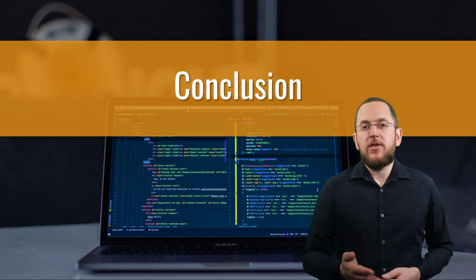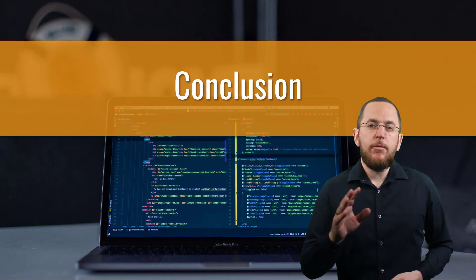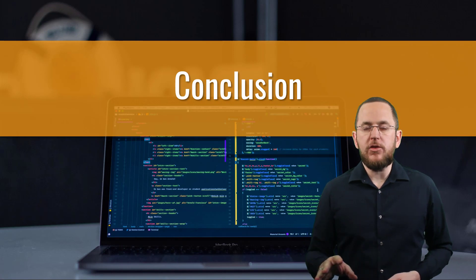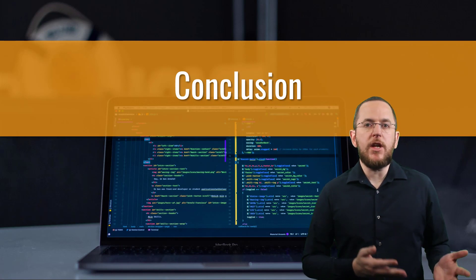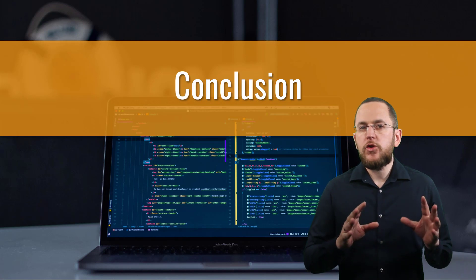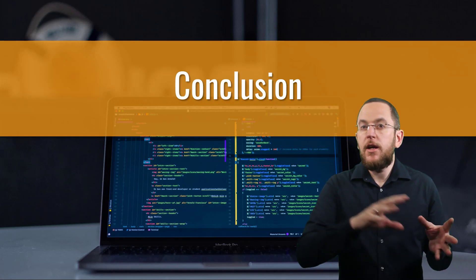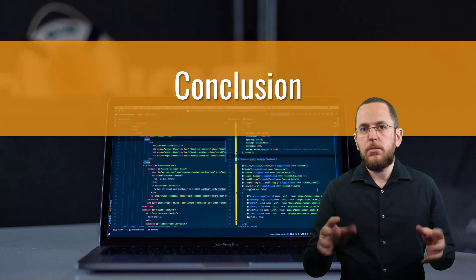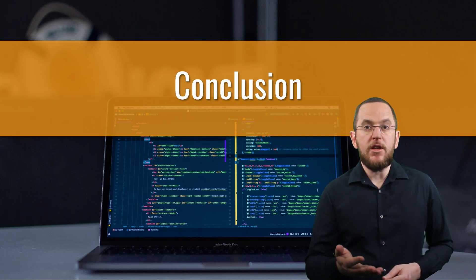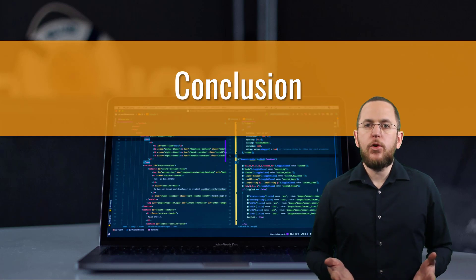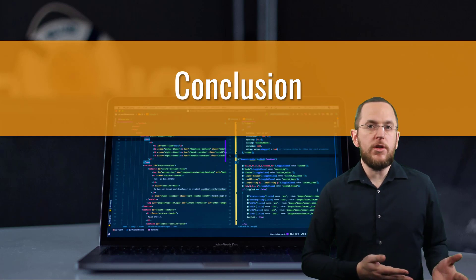When using an inheritance hierarchy in your domain model, Hibernate needs to apply a mapping strategy to map the classes to one or more database tables. By default, Hibernate uses inheritance type SingleTable, which maps all entity classes of the inheritance hierarchy to the same database table. This mapping requires a discriminator value that tells Hibernate to which subclass it has to map the record. By default, this value gets stored in a separate column.